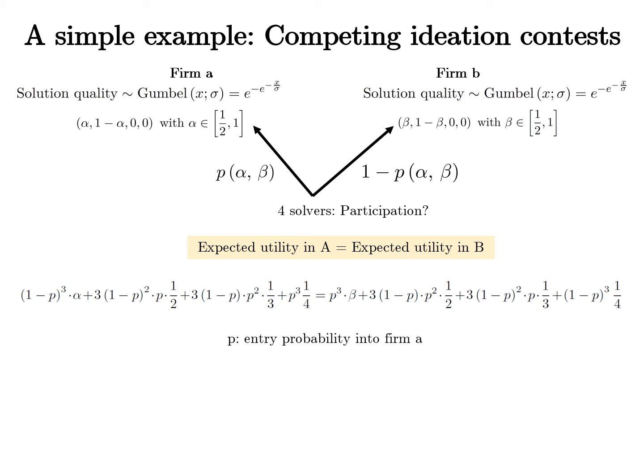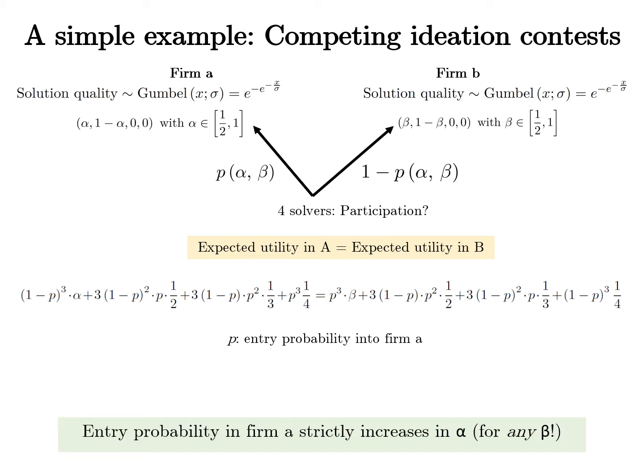In equilibrium, the expected utility from entering contest B and entering contest A must be equal. There is no closed-form solution to this equation for a population of size n equals 4 or more. However, by standard comparative statics arguments, we can show that solver participation is strictly increasing in the value of the top prize alpha.